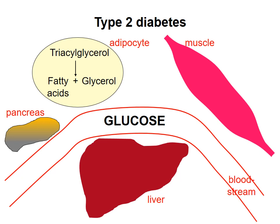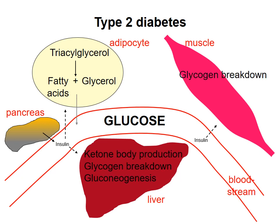In people with type 2 diabetes, the cells of the pancreas that produce insulin have impaired function and do not produce as much insulin as would be required for a full response to high blood glucose. Often, the cells of the person are not as sensitive to the presence of insulin, resulting in a reduced response to the insulin that is present. The impact on metabolism is similar to what is seen in type 1 diabetes: triacylglycerol and glycogen breakdown are favored, as is gluconeogenesis and ketone body production.